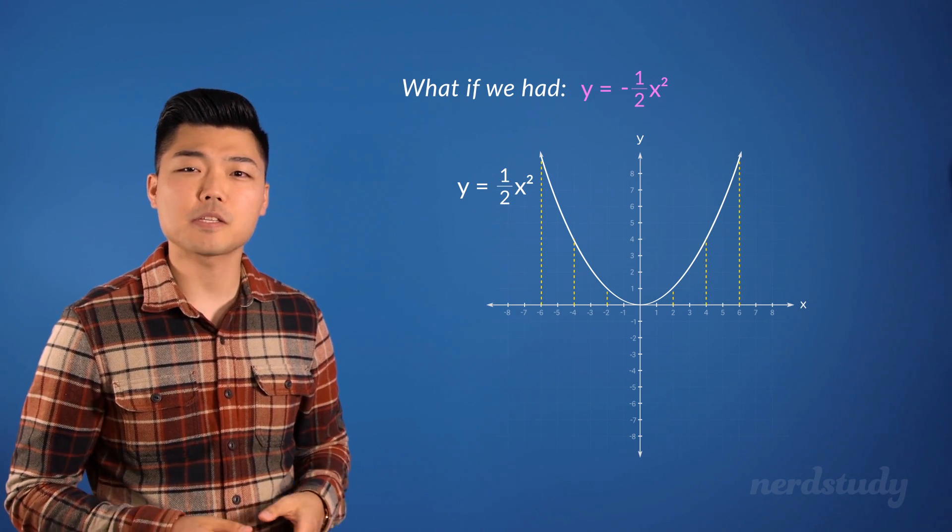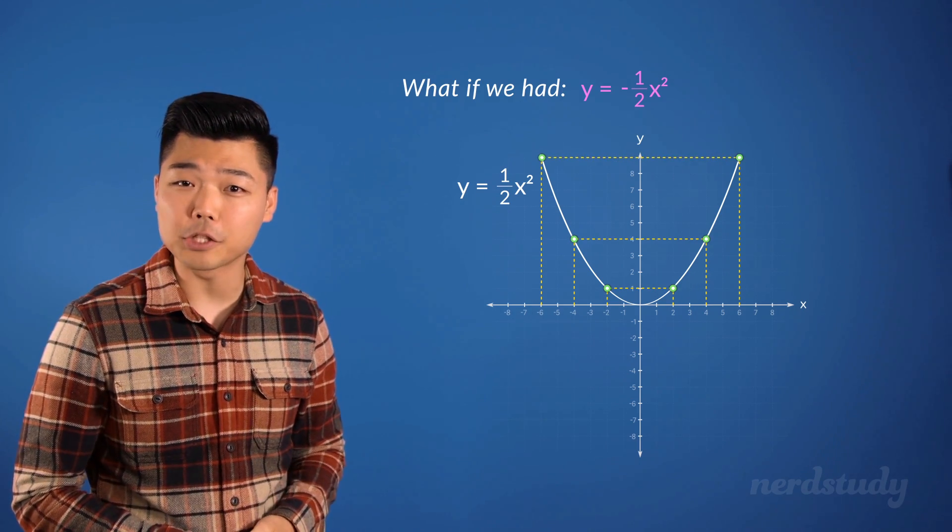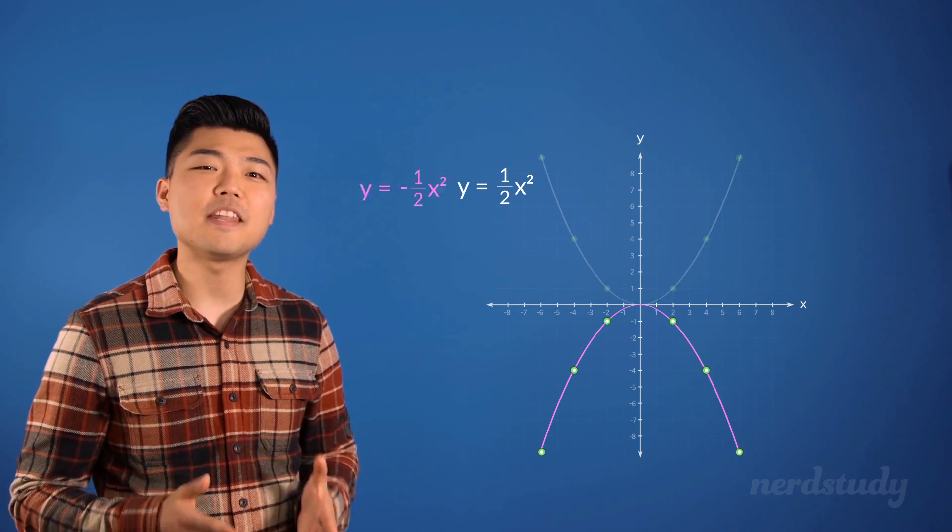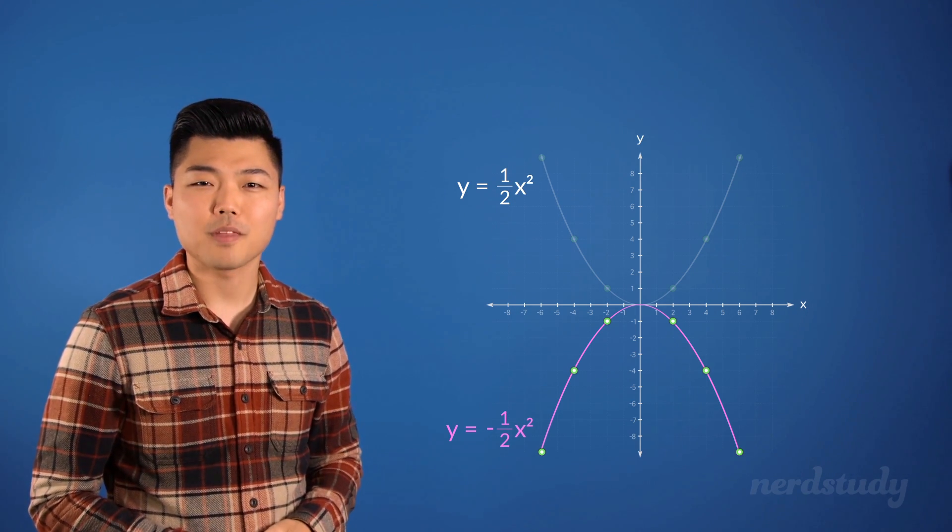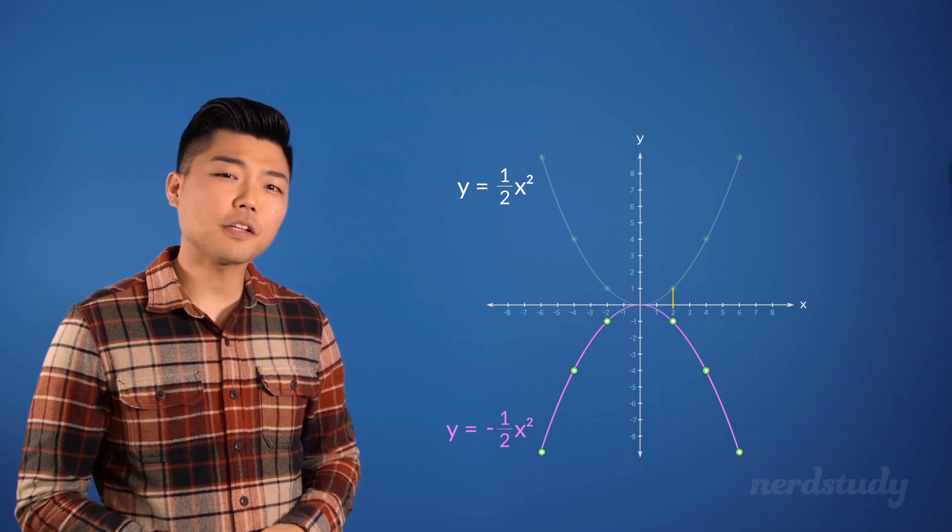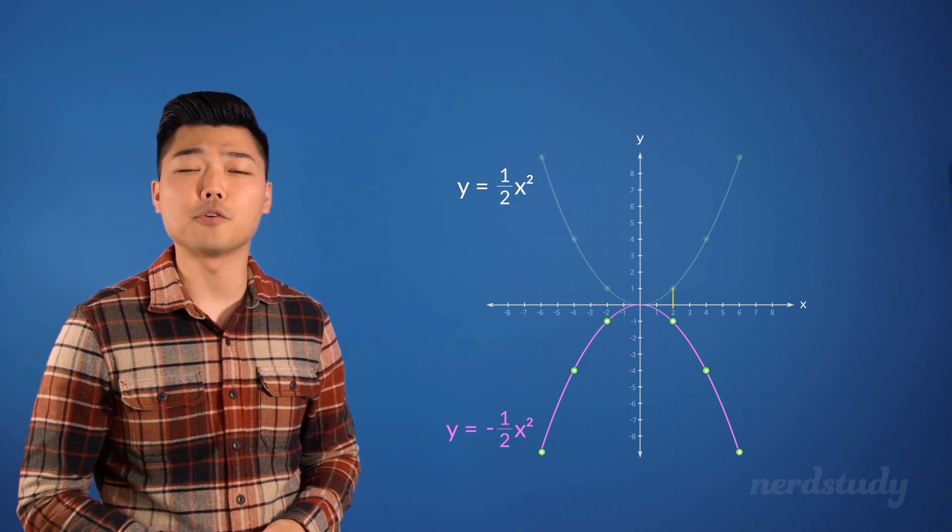Every x value that once yielded this particular y value now yields the negative version of that y value. So, as you can see, this particular x value of 2 used to yield a y value of 1.